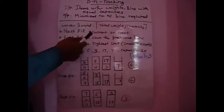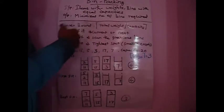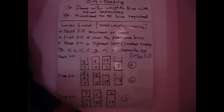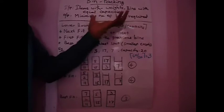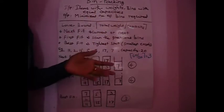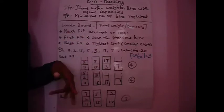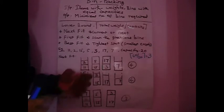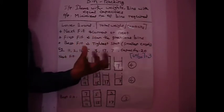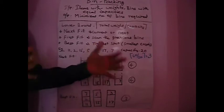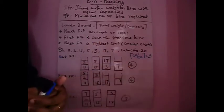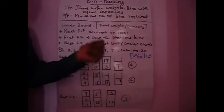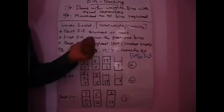For reference, we cannot have a value less than this lower bound — this is the minimum number of bins required. We have different algorithms for finding the number of bins required to accommodate all the items. We can divide them into two categories: online algorithms and offline algorithms. In online, items arrive during runtime; in offline, we have all items at hand before solving.